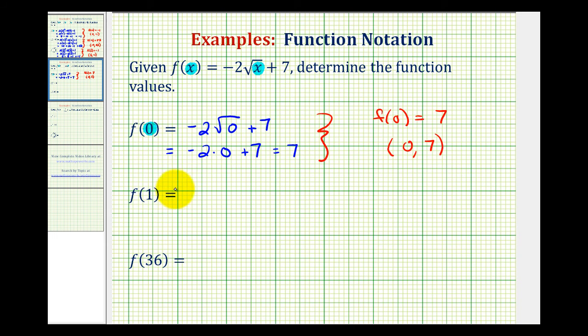For f of 1, we'll now substitute 1 for x. So f of 1 is going to be equal to negative 2 times the square root of 1 plus 7. Well, the square root of 1 is equal to 1, so we have negative 2 times 1 plus 7. Negative 2 times 1 is negative 2 plus 7 is equal to 5.